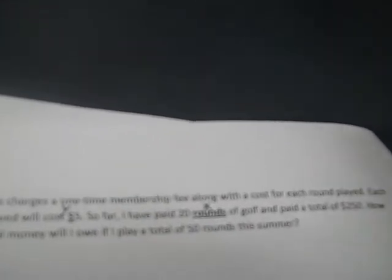A golf club charges a one-time membership fee along with a cost for each round played. Each round played will cost $5. So far, I've played 20 rounds of golf and paid a total of $250. How much total money will I owe if I play a total of 50 rounds this summer? So again, there's two units. So anytime there's two units, I want to make these three things kind of off to the side.